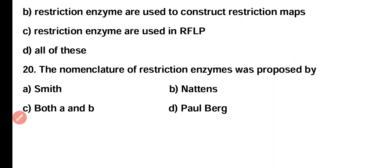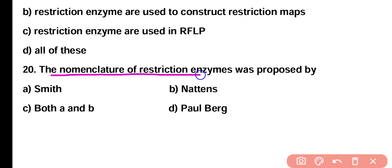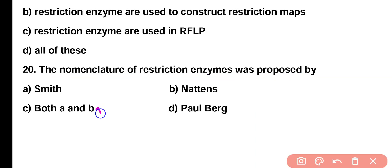Question 20. Nomenclature of restriction enzyme was proposed by: Option A: Smith, Option B: Nathan, Option C: both A and B, Option D: Allberg. Correct answer is Option C. Restriction enzyme nomenclature was proposed by both Smith and Nathan. Thank you very much.